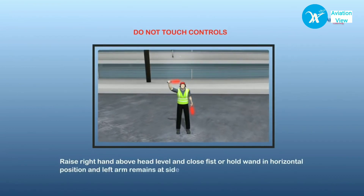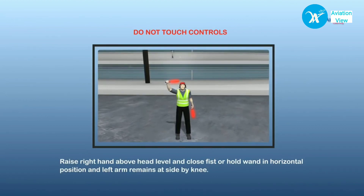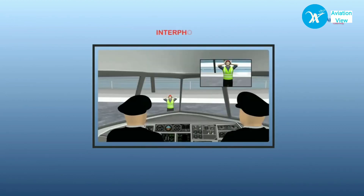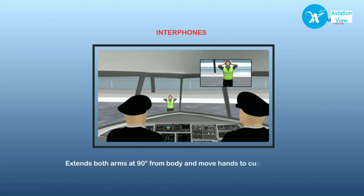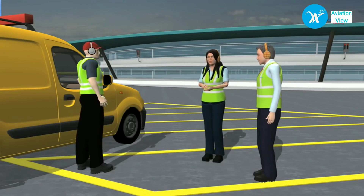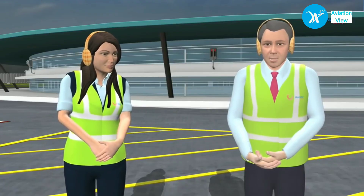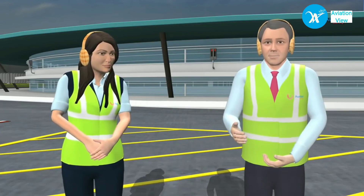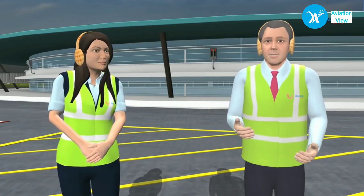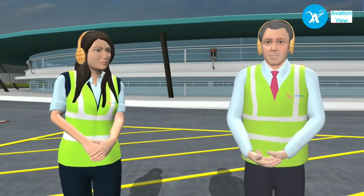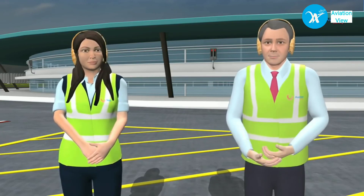When the marshaller needs to communicate to the captain that the interphones are on, he extends both arms at 90 degrees from the body and moves his hands to cup both ears. That completes the marshalling signals required to communicate between the flight crew and the marshaller. Let's take a break and check our understanding. In the next module, we will move on to pushback operations and the communication required for that procedure.